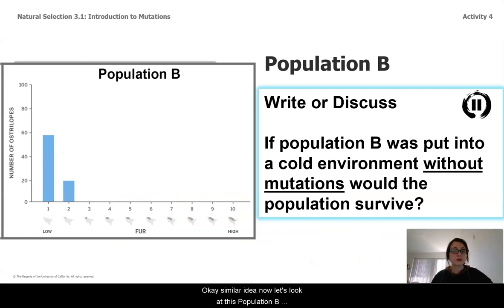Okay, similar idea now. Let's look at this population B. They're also now in a cold environment and they can't mutate. Do you expect that they would survive?